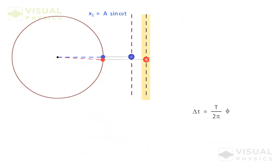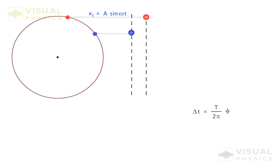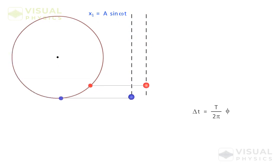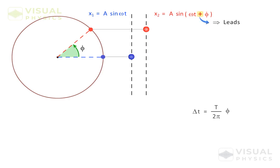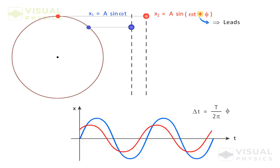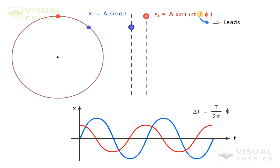If this SHM was ahead by a phase of φ, then its equation will be like this. And as it achieves its maximum value before the first SHM, its graph will be shifted towards the left by an equivalent phase difference of φ.